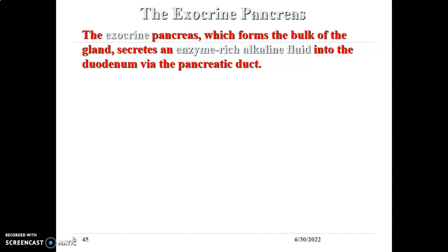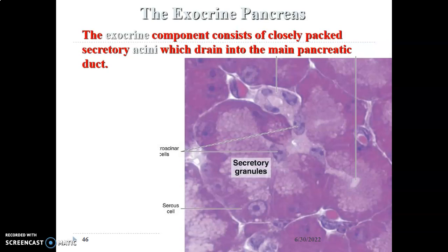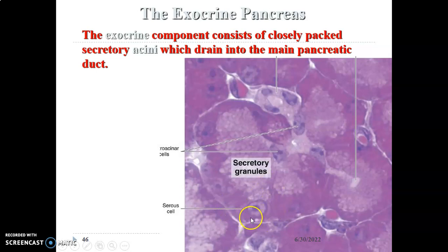The exocrine pancreas forms the bulk of the gland. It secretes enzymes in an enzyme-rich alkaline fluid released into the duodenum via the pancreatic duct. The exocrine pancreas is made up of acinar cells that open into the main pancreatic duct. Acinar cells are pyramidal in shape, with basal rough endoplasmic reticulum and ribosomes, and apical zymogenic granules containing the enzymes. The ducts are lined by simple cuboidal epithelium.